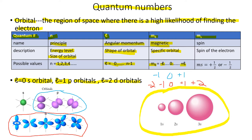The last quantum number is m-sub-s, the spin quantum number, which deals with the spin of the electron rather than the orbital. The values for m-sub-s are not integers — they are plus one-half or minus one-half, representing the two possible spin states: clockwise or counterclockwise. The values for m-sub-s do not depend on the other quantum numbers; they are always plus one-half or minus one-half.